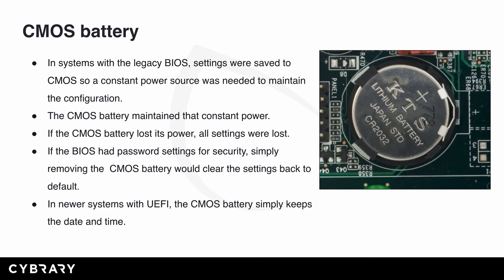Let's talk about the CMOS battery. In systems with the legacy BIOS, settings were saved to the CMOS, so a constant power source was needed to maintain the configuration. The CMOS battery maintained that constant power to make sure no settings were lost. If the CMOS battery power was lost, then all your settings were lost. The CMOS had to have a constant source of power to keep all your memory settings, changes, and passwords. In fact, if the BIOS had a password for security reasons, simply removing the CMOS battery would clear those settings back to default — you can see what a big security risk that was.